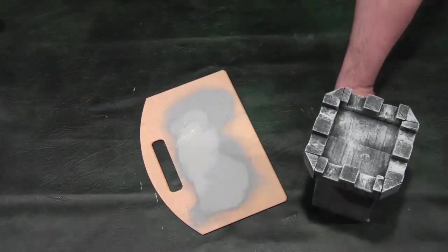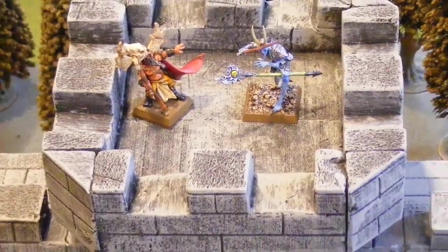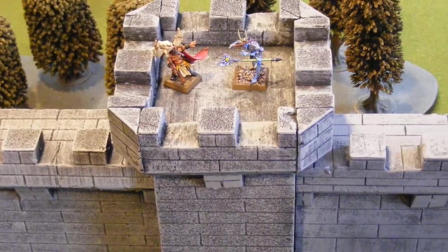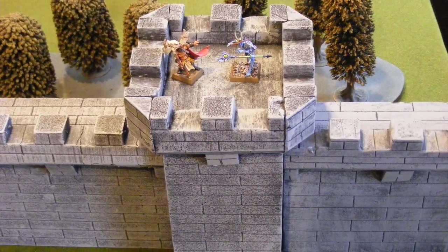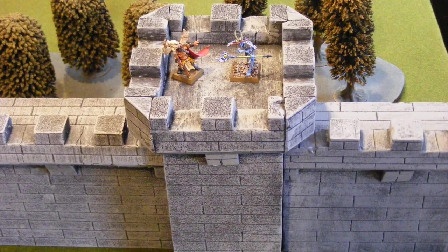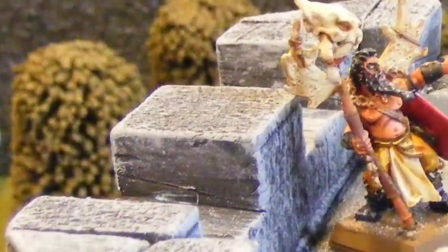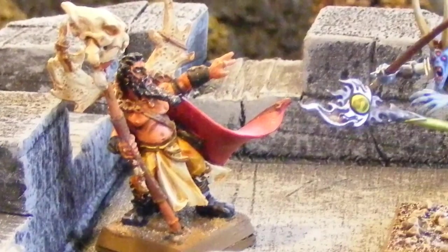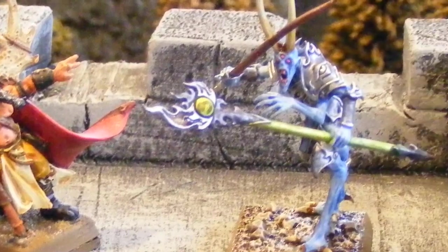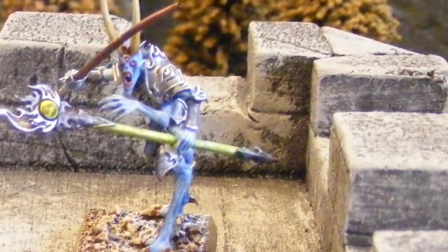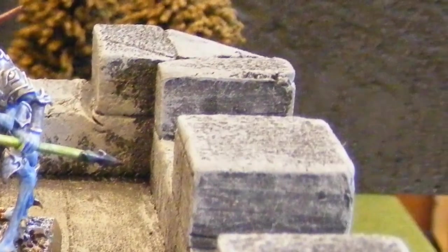That is the castle tower complete, to go with the castle wall that we did last week. I'll leave you with a few pictures, showing the feature in use, with a couple of models fighting over it. I hope you've enjoyed this tutorial folks, and I'll catch you again next week for the third installment, where we cover the gatehouse. Until then, take care.